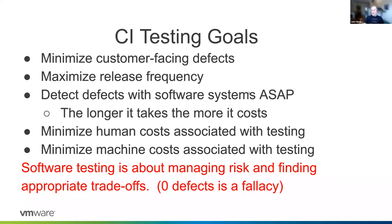At Google, we figured out that if we ran every test — we had six and a half million tests — every time a developer made a change, which happened several times a second, we would have used more computers than Google Search used. So at some point it doesn't become cost effective to throw all those tests at every single change. Software testing is really about managing risk and finding appropriate trade-offs. Zero defects is kind of a fallacy — no even simple software system is defect-free.